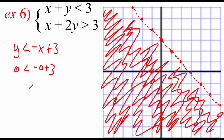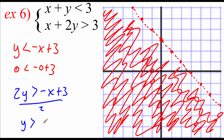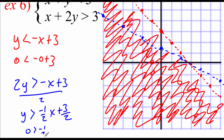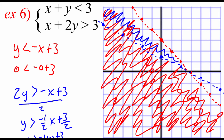Looking at the other equation, subtracting x over gives two y is greater than negative x plus three. Dividing by two, we get y is greater than negative one-half x plus three-halves. Sketching in blue with a dotted line since it's just greater than. Testing zero, zero: zero is greater than negative one-half times zero plus three-halves, which says zero is greater than one — not a true statement — so we shade on the opposite side, above the line. The region shaded by both red and blue is the middle portion between our two dotted lines, highlighted in green.